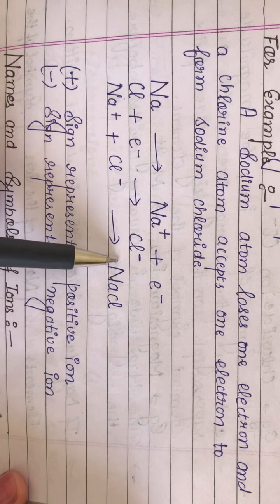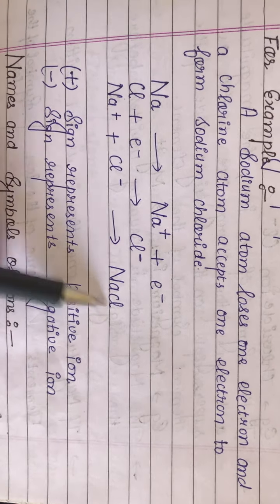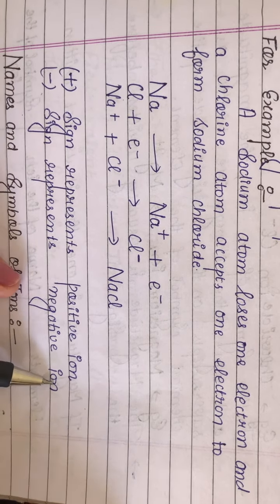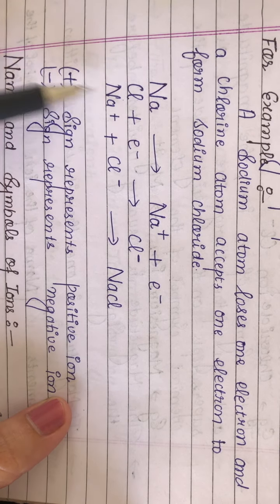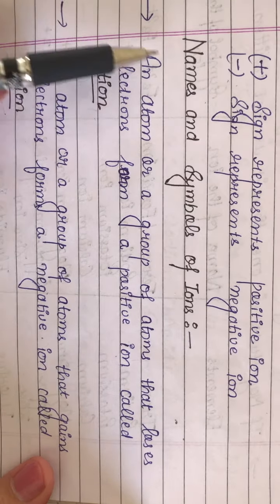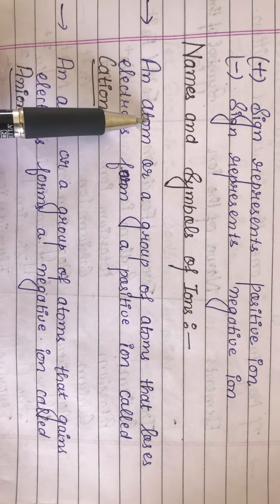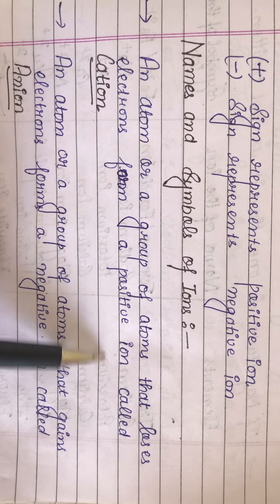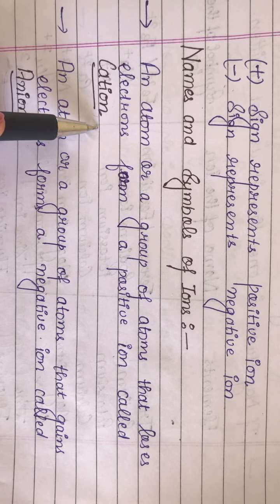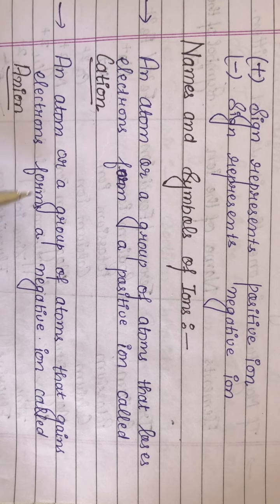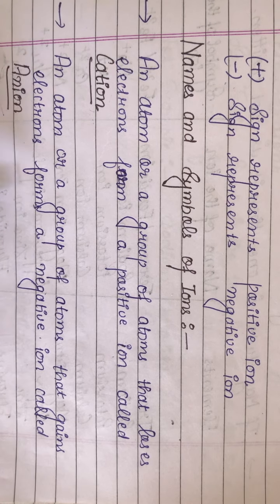These two ions combine together and form NaCl, sodium chloride. A positive sign represents a positive ion and a negative sign represents a negative ion. A positive ion is formed when the atom loses an electron, and a negative ion is formed when the atom gains an electron. An atom or group of atoms that loses electrons forms a positive ion called a cation. An atom or group of atoms that gains electrons forms a negative ion called an anion.